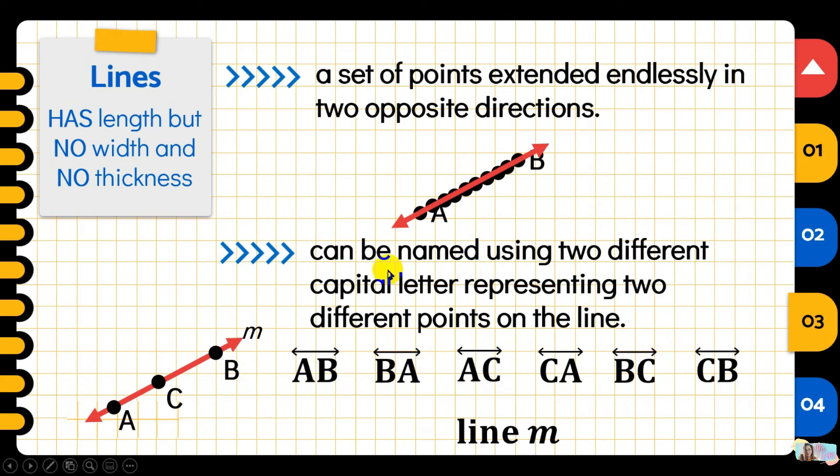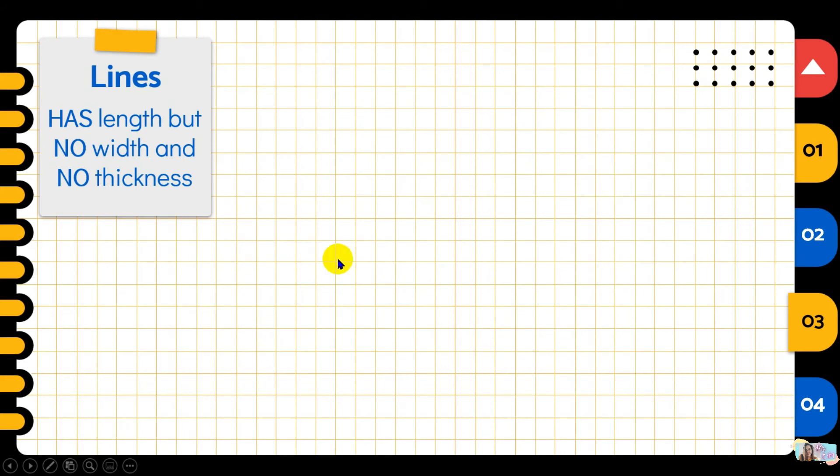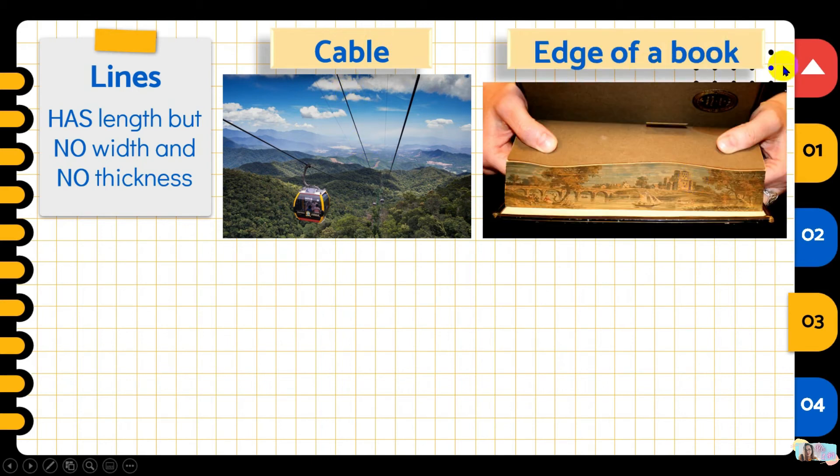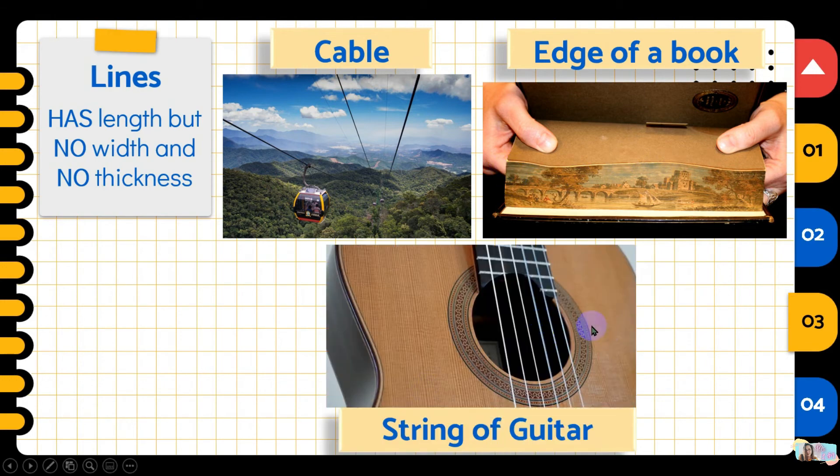Now, what are the pictorial representations of lines? What are the lines around us? Examples are the cable on a cable cart. Another is the edge of a book. If earlier we had corner of a book, now we have edge of the book. So when we say edge, that's the side. So a line represents that edge. Another is the string of a guitar. That also represents a line. I know there are many more. Just look around you. You can find another representation of a line.